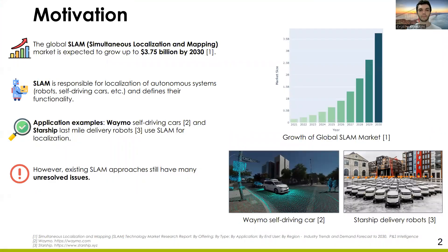Simultaneous localization and mapping, in short SLAM, is an essential part of autonomous robots. Its global market is expected to grow at a high pace. During the work, SLAM creates a map of the environment and at the same time localizes the robot on this map. For the last decade, mobile robots have been successfully implemented in many areas, including goods delivery, warehouse logistics, autonomous transport, disinfection, and agriculture.